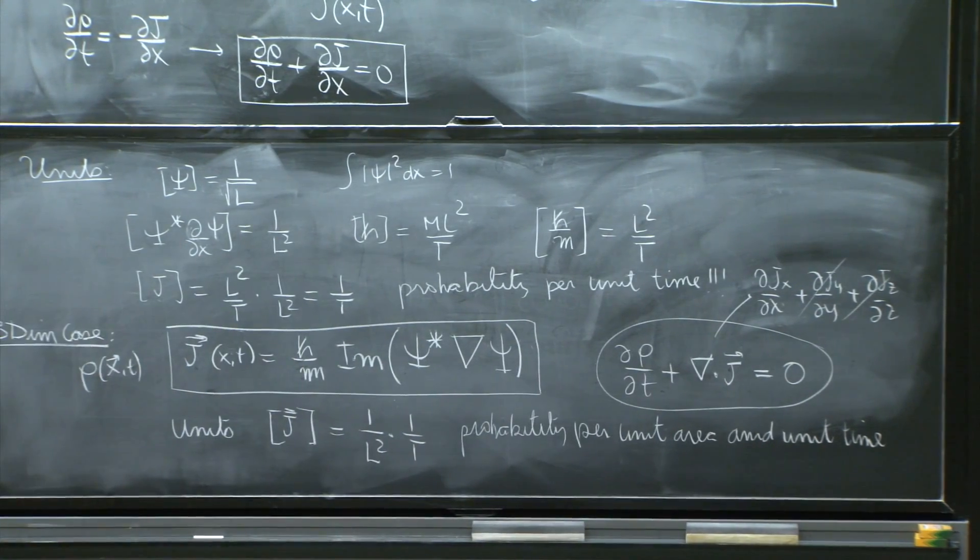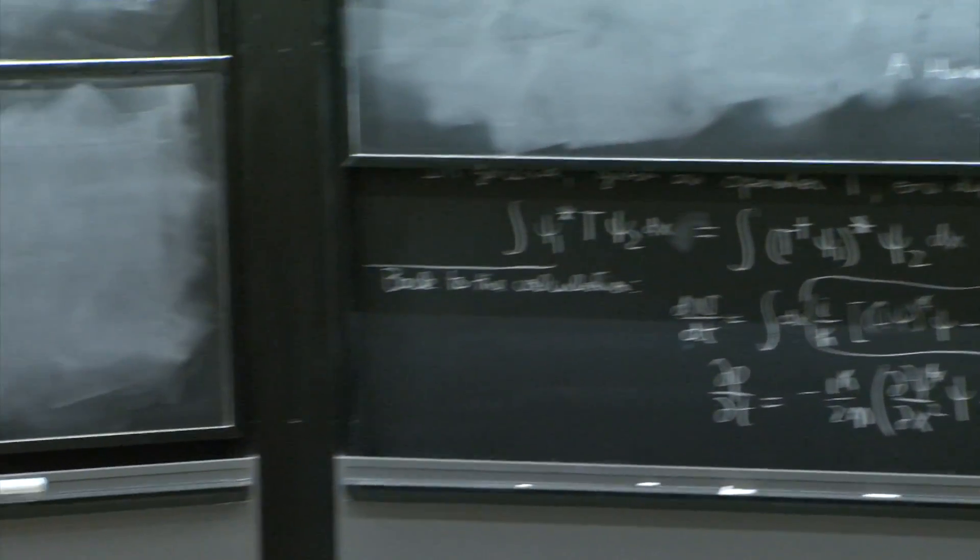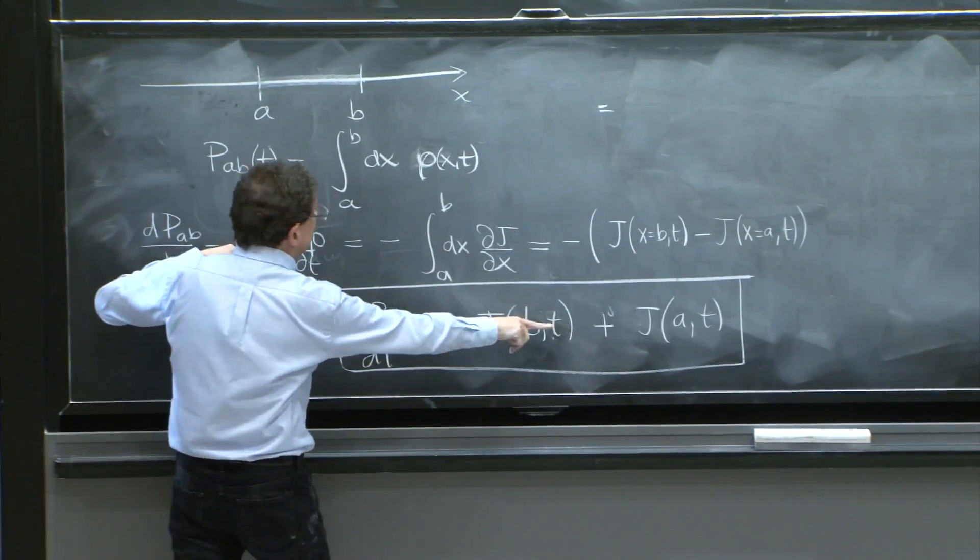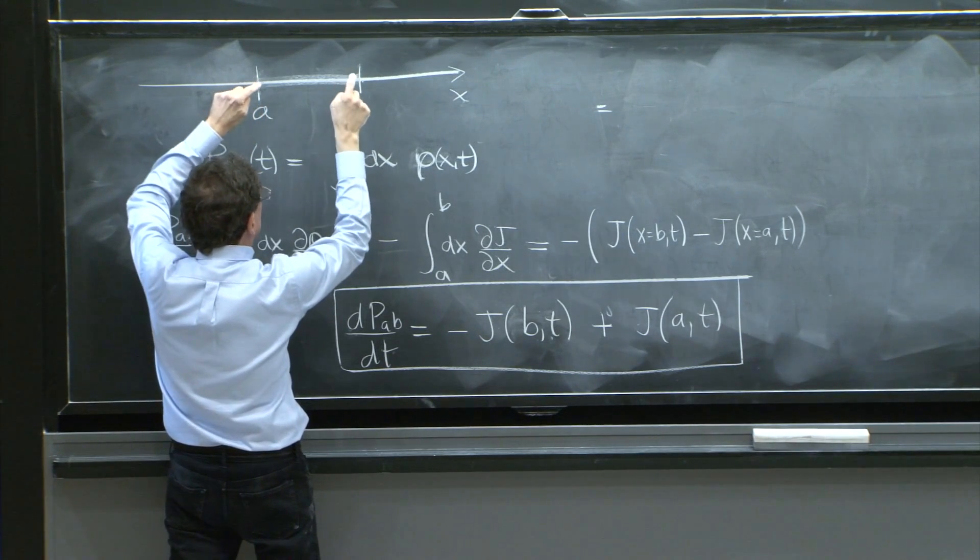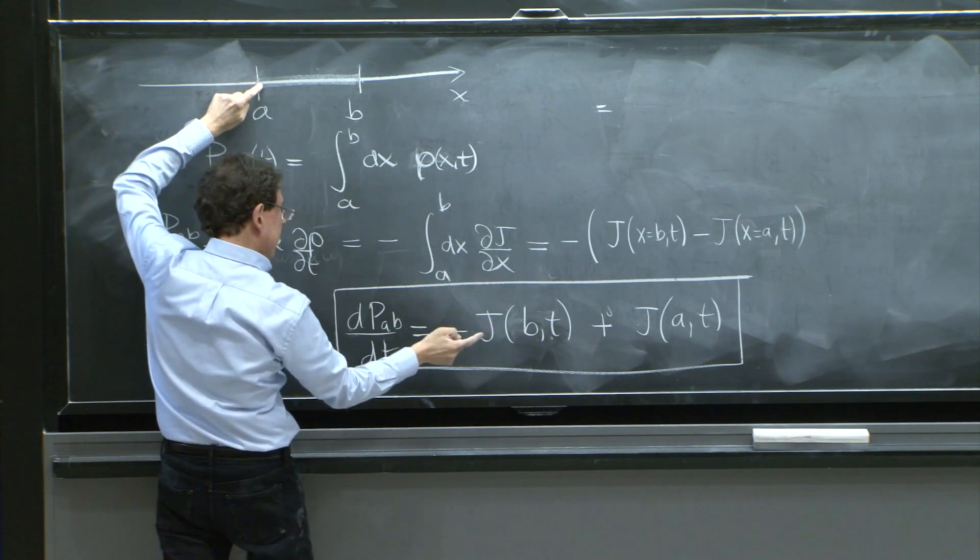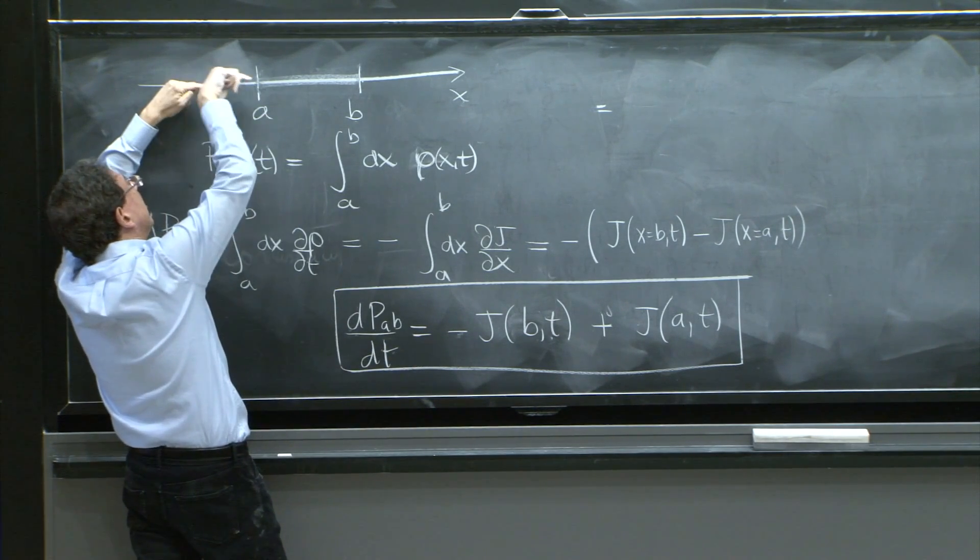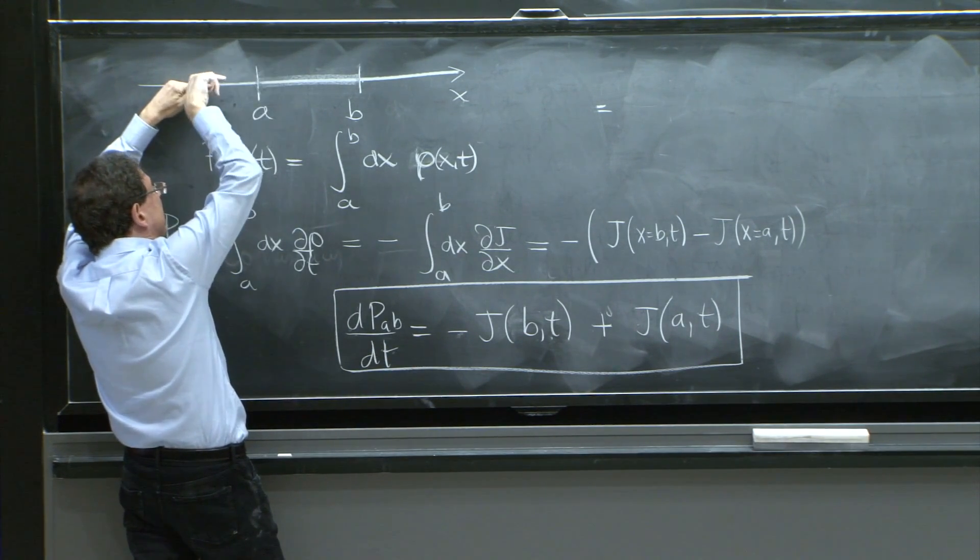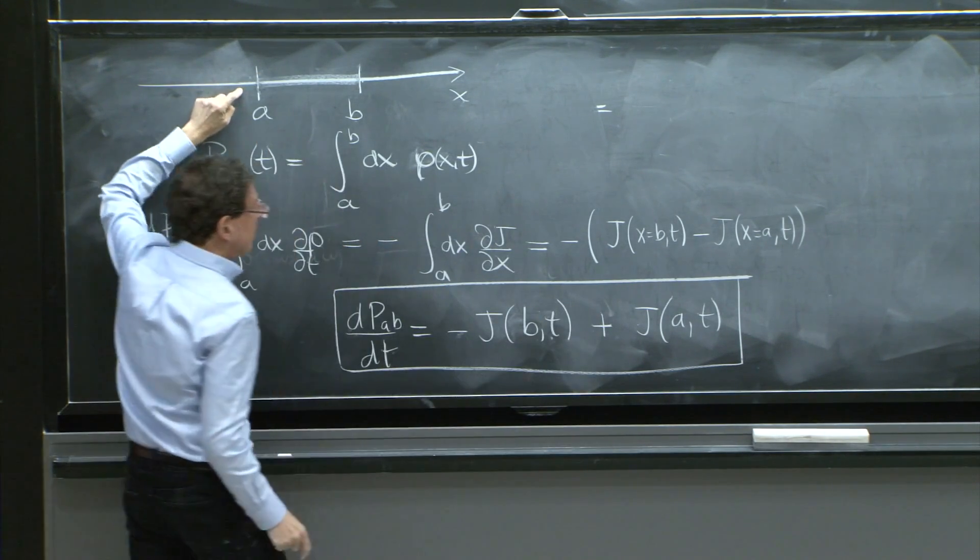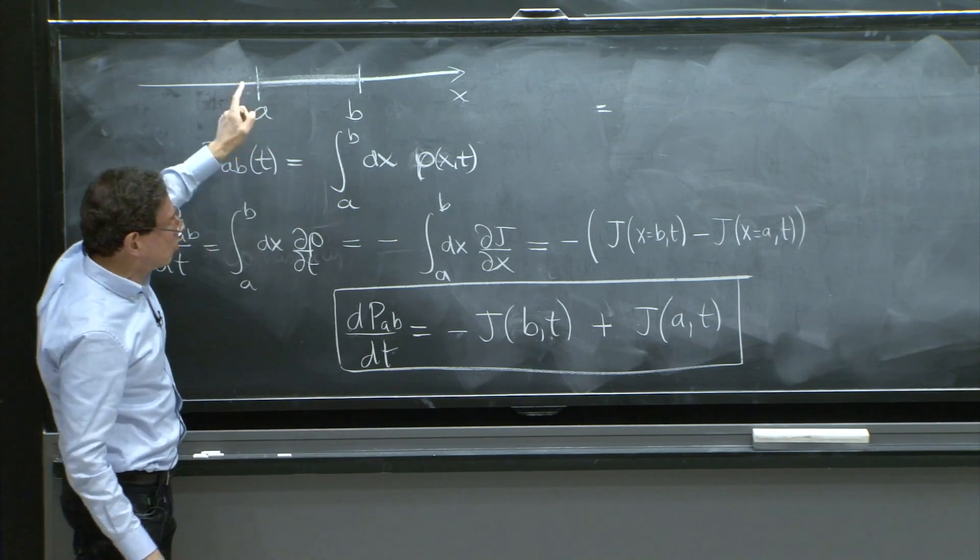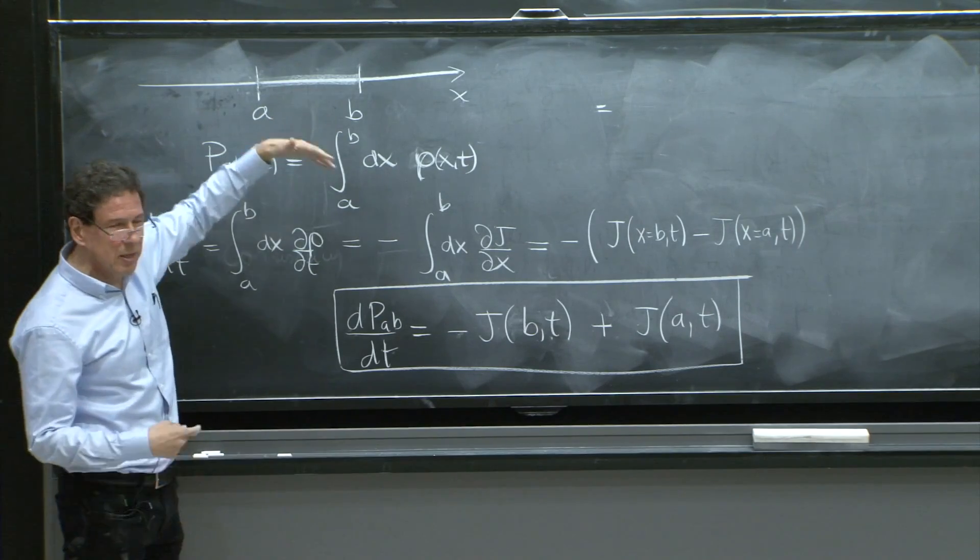But here you see, indeed, if the currents are positive, if the current at b is positive, there's a current going out. So that tends to reduce the probability. That's why the sign came out with a minus. On the other hand, if there's a current in a, that tends to send in probability. And that's why it increases it here. So the difference between these two currents determines whether the probability here increases or decreases.